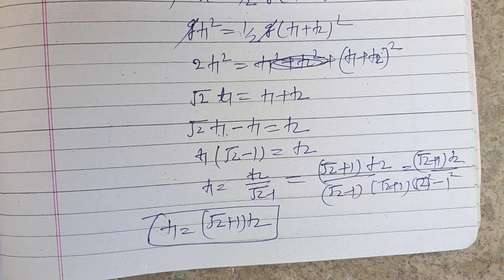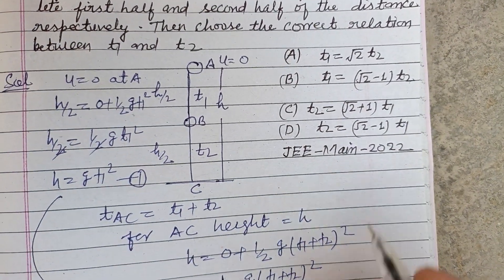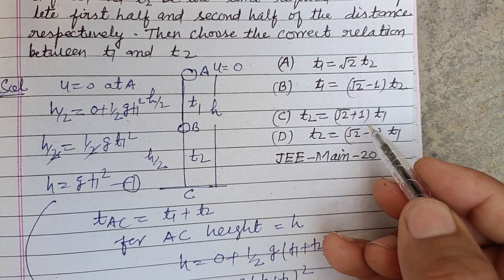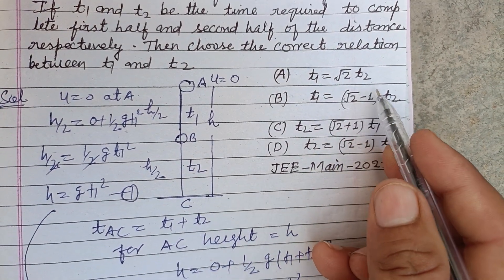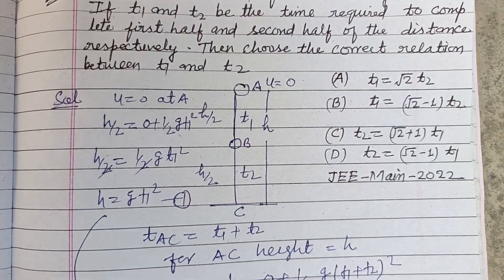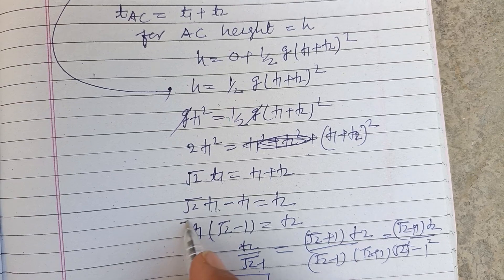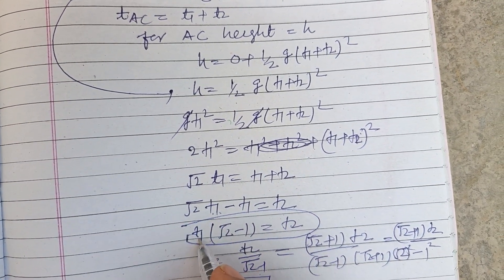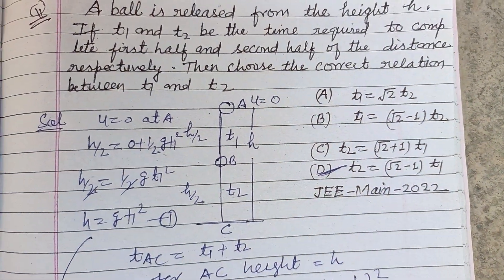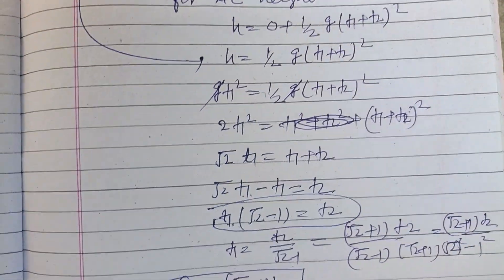Therefore, the correct relation is t1 = (√2 + 1)·t2, or equivalently t2 = (√2 − 1)·t1. From the given options, option D is the correct answer. I hope you got it — please like the video and subscribe to the channel. Thanks for watching.